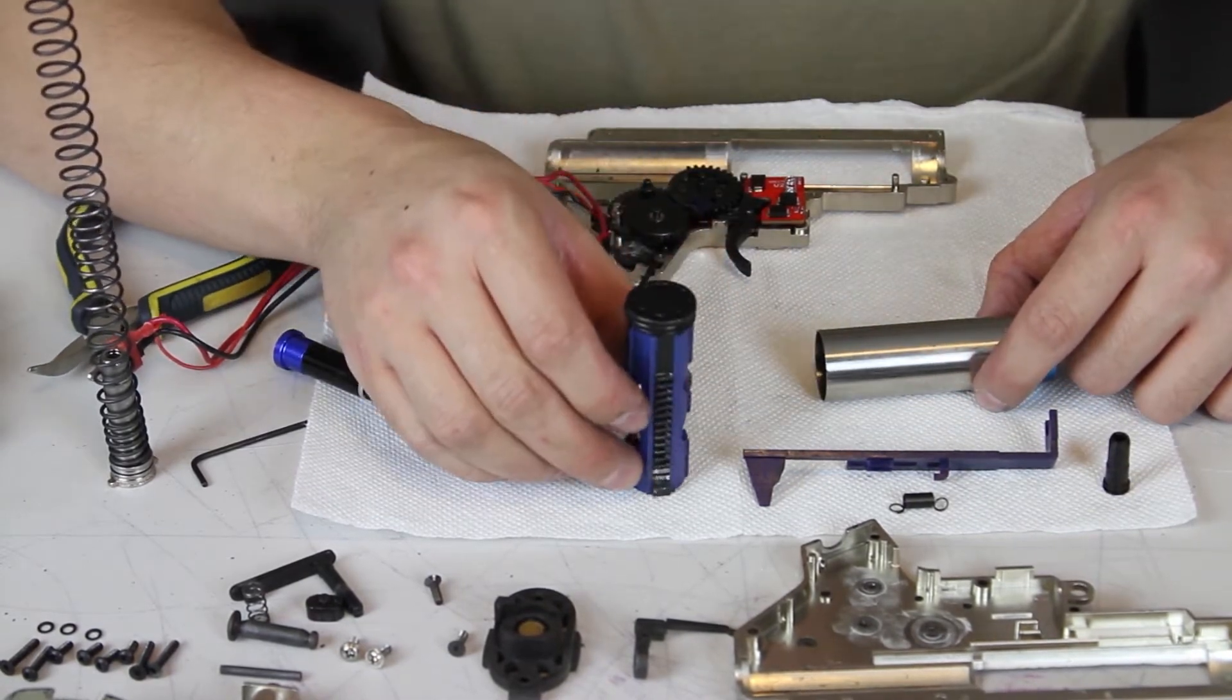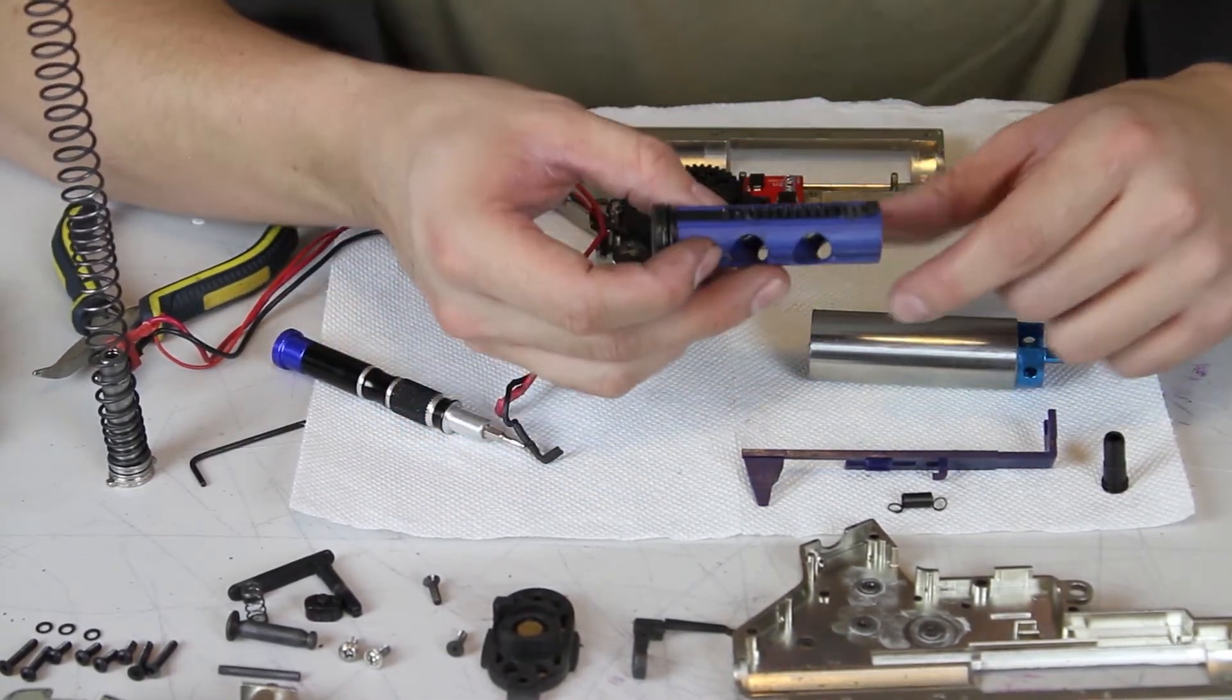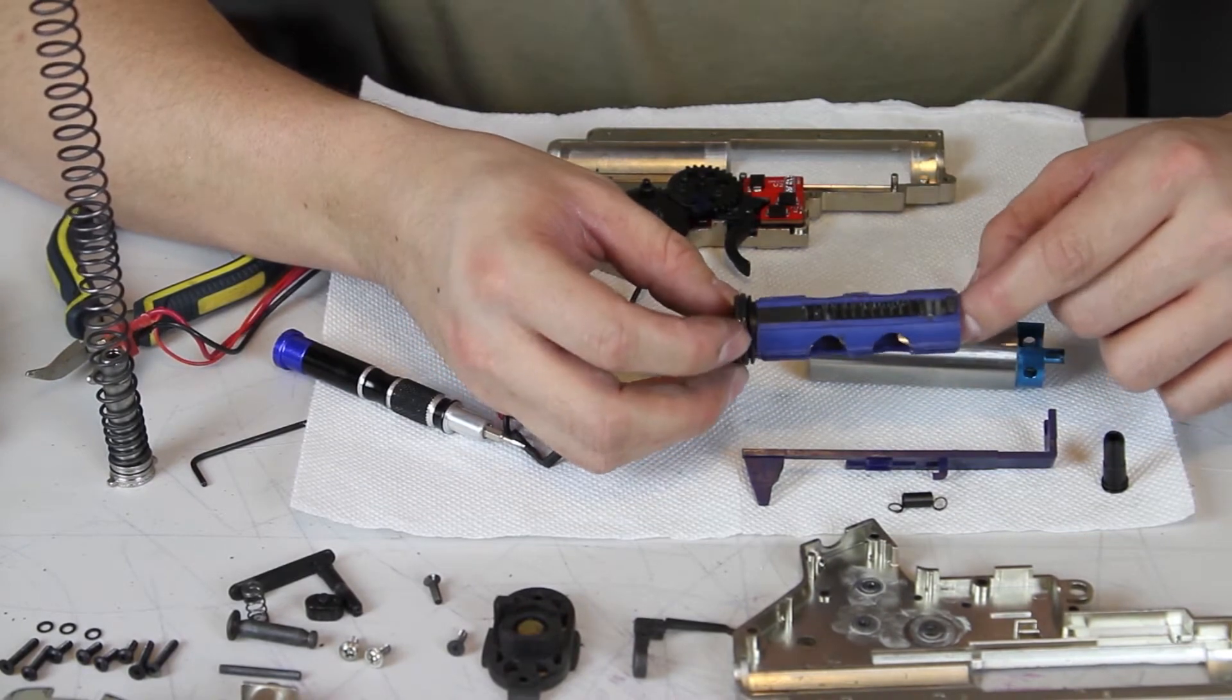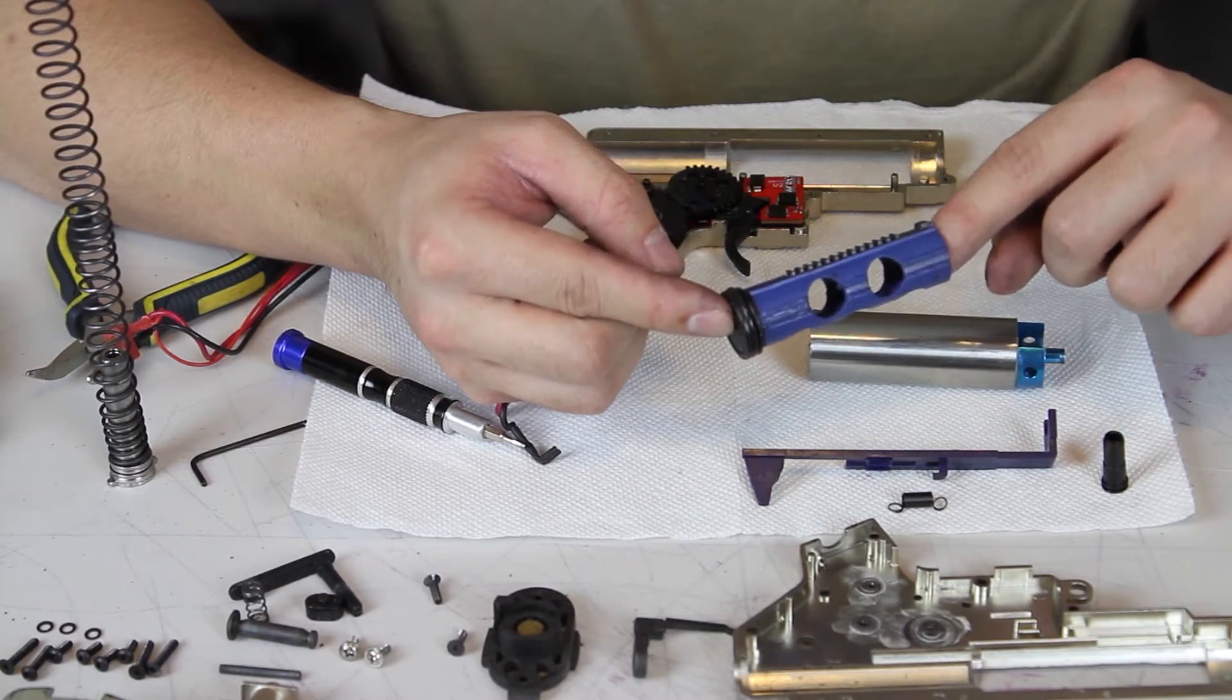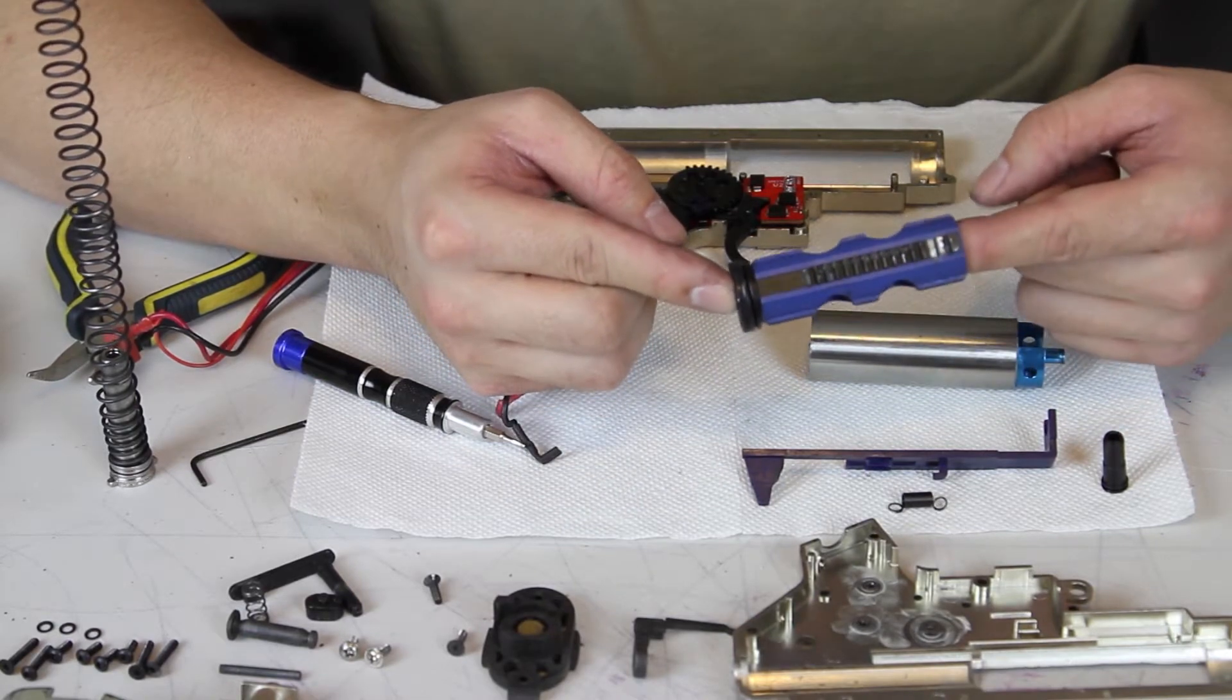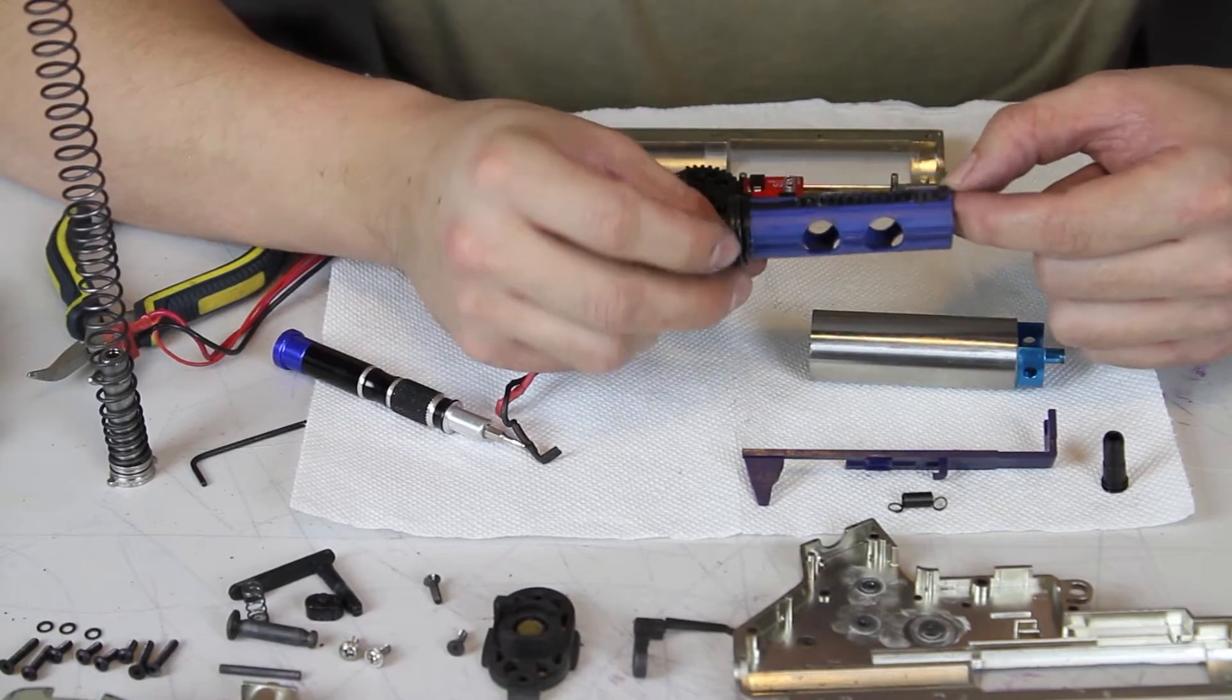Then you have your piston, which is what actually compresses the air that our airsoft guns shoot. This particular piston is Jason's favorite. It is a lightweight SHS piston with metal teeth. It is extremely durable, very inexpensive, and is in almost every Stormrider gun.